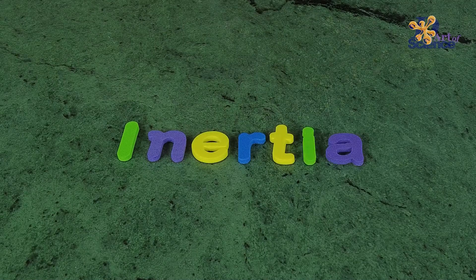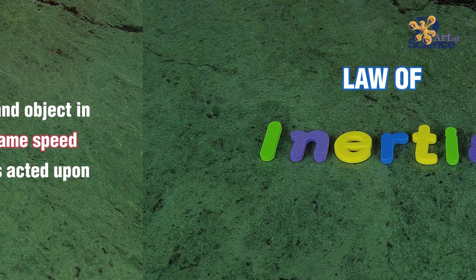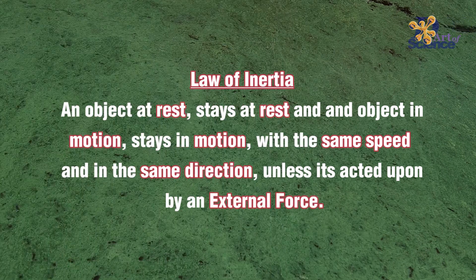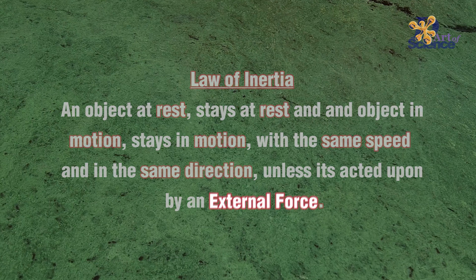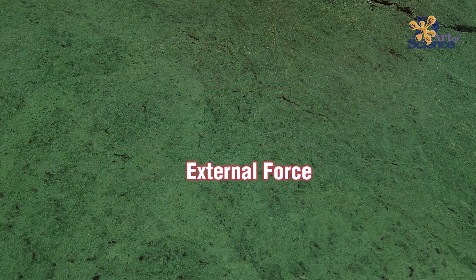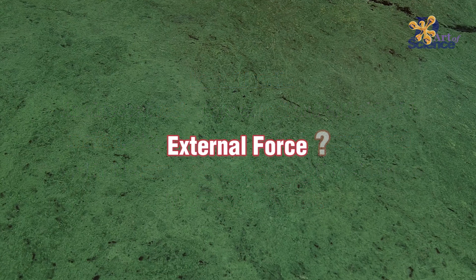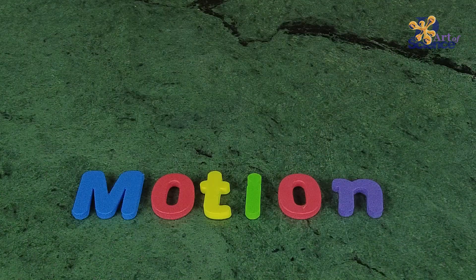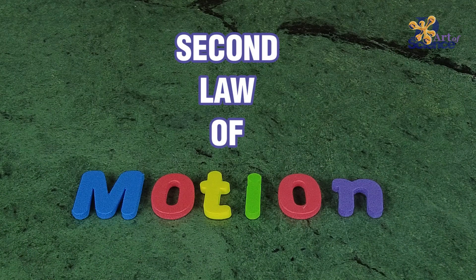Last week we learned about the first law of motion, which is the law of inertia. It states that a body at rest remains at rest and a body in motion remains in motion unless acted upon by an external force. So what happens to the body when it's acted upon by this external force? That's exactly what we are going to learn today — Newton's second law of motion.